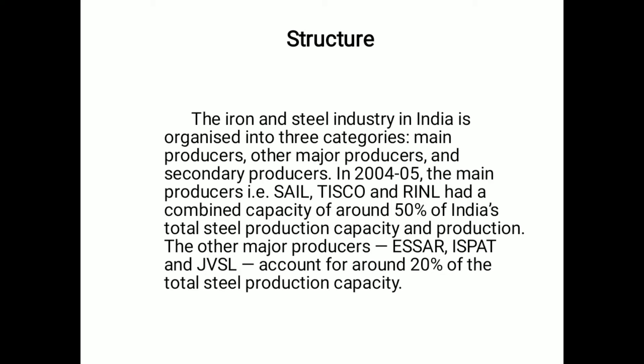The structure of the iron and steel industry in India can be explained as follows. The industry is organized into three categories: main producers, other major producers, and secondary producers. In 2004-05, the main producers — SAIL, DISCO, and RINL — had a combined capacity of around 50 percent of India's total steel production capacity.